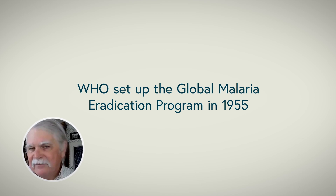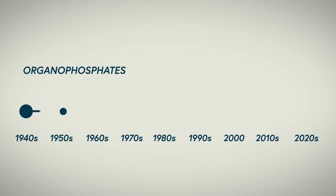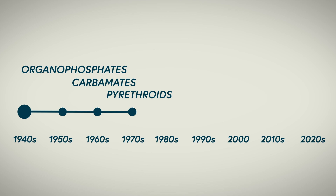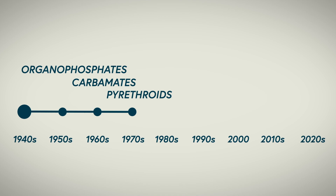The WHO set up the Global Malaria Eradication Program in 1955. The ensuing years saw the development of new insecticides: the organophosphates in the 1950s, the carbonates in the 1960s, and the pyrethroids in the 1970s.